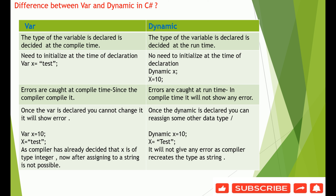Once var is declared with a certain data type, you cannot change it later. For example, var x = 10 means x is of type int. If you try to assign x = "test" on the next line, the compiler will throw an error because it has already decided that x is of type integer — reassigning to a string is not possible.